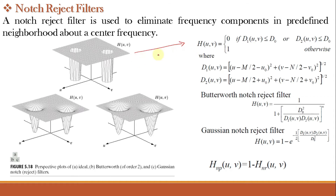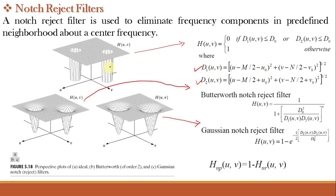The transfer function for the ideal notch reject filter rejects components where D1 is less than or equal to D0 or D2 is less than or equal to D0, and passes all other frequencies, where D1 and D2 are given by their respective equations. You can see in the plot it rejects two particular bands. The Butterworth notch reject filter is given by its equation where N is the order, and the Gaussian notch reject filter is given by its corresponding equation.